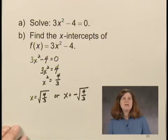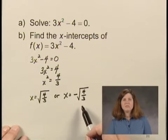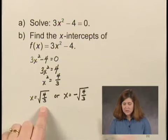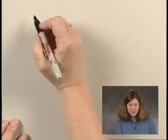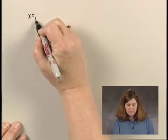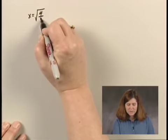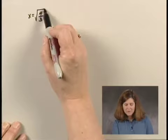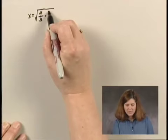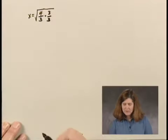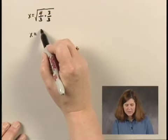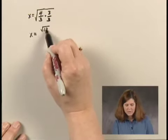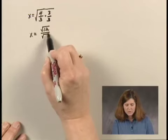Now typically, we give our answers with rationalized denominators. So let's rationalize these denominators. We have x = √(4/3) as one solution. If I multiply inside the radical sign by 3/3, this gives me x = √12 / √9.